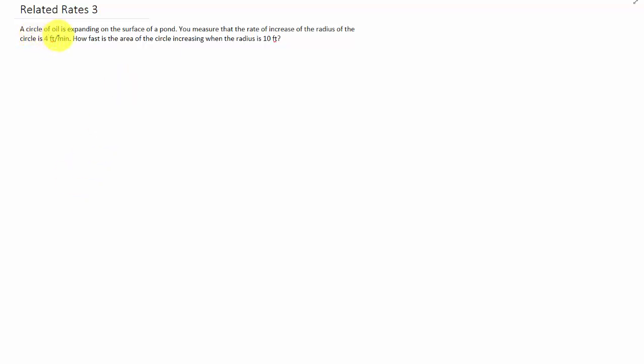Okay, so oil is forming a circle on the surface of a pond, and that circle is expanding. We measure that the rate of increase of the radius of the circle is 4 feet per minute. How fast is the area of the circle increasing when the radius is 10 feet?